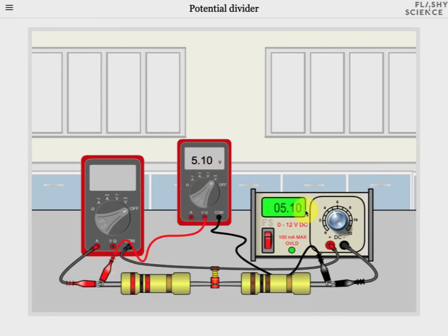If we move the black crocodile clip to the central position, then we measure the potential difference across the left-hand resistor. This allows you to get to the heart of the potential divider circuit and understand how it works by changing the resistance values and changing the potential difference across the resistors.